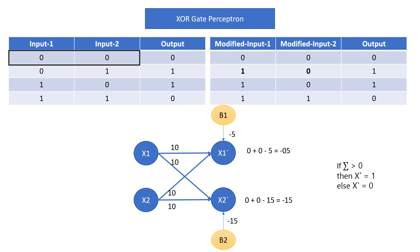So I have introduced a bias function b1 and b2. B1 goes for x1-dash (modified input 1) with a bias weight of minus 5, and b2 goes for x2-dash with a bias weight of minus 15. For input (0,0): zero times 10 is zero from both lines, plus the bias weight of minus 5 gives summation minus 5 for x1-dash. Since summation is less than zero, x1-dash is 0. For x2-dash: zero plus zero plus minus 15 gives minus 15, which is also less than zero, so x2-dash is also 0.